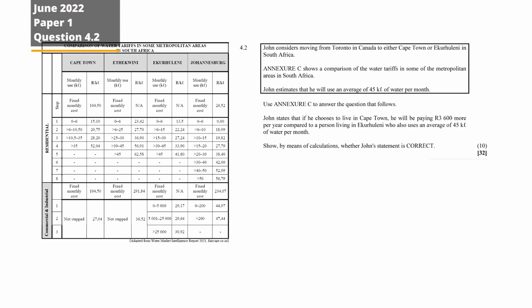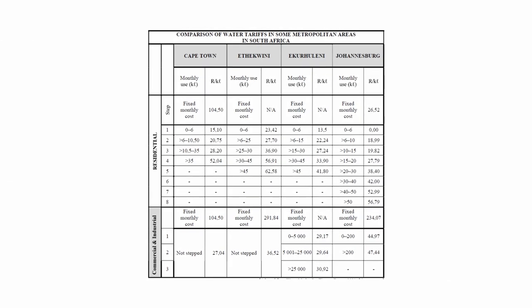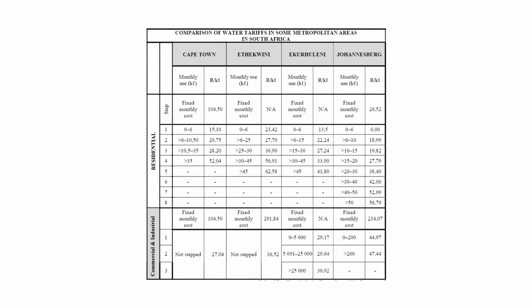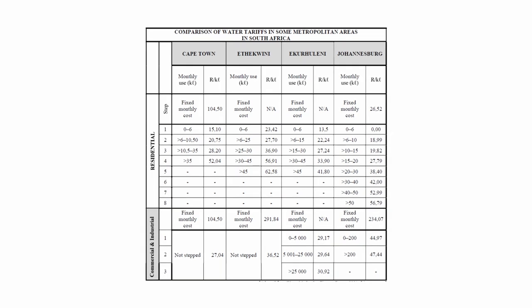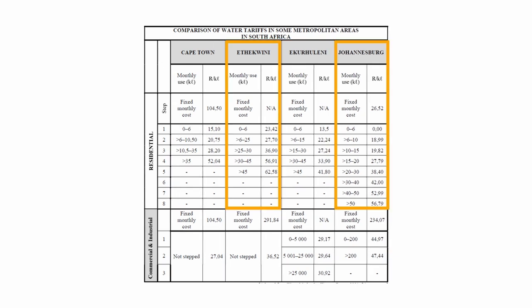Question 4.2 consists of one question designed to assess your understanding of water tariffs. Annexure A shows a comparison of water tariffs for Cape Town, Ethikwini, Ekurhuleni, and Johannesburg. This question only requires you to make a comparison between Cape Town and Ekurhuleni, so the Johannesburg and Ethikwini information is not needed for this question.